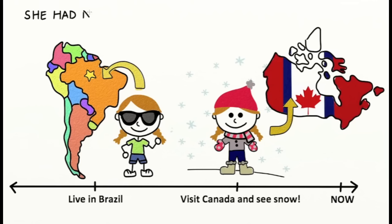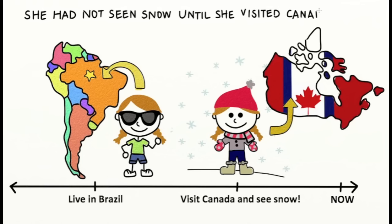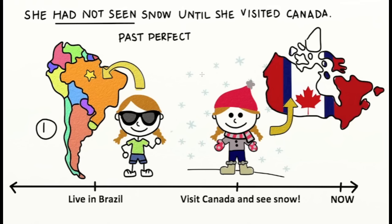Another example: she had not seen snow until she visited Canada. Again, we use the past perfect to describe the first action and the past simple to describe the second action.